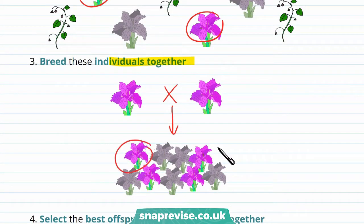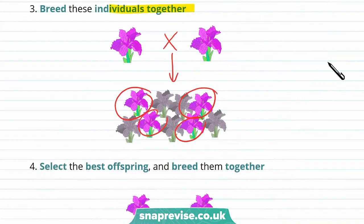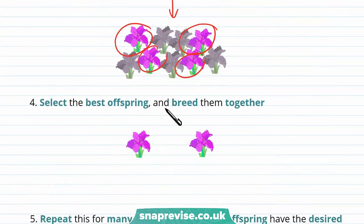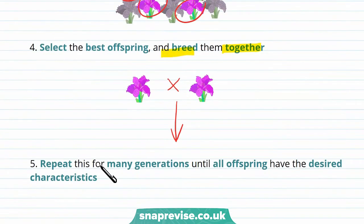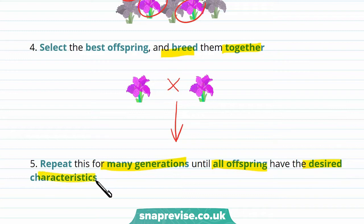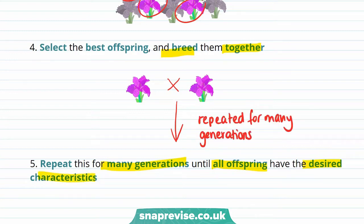As you can see, there are some purple flowers in the offspring. You then select these purple flowers and breed them together again. This is repeated for many generations until all offspring have the desired characteristic, so that in the end all the offspring will be purple flowers.